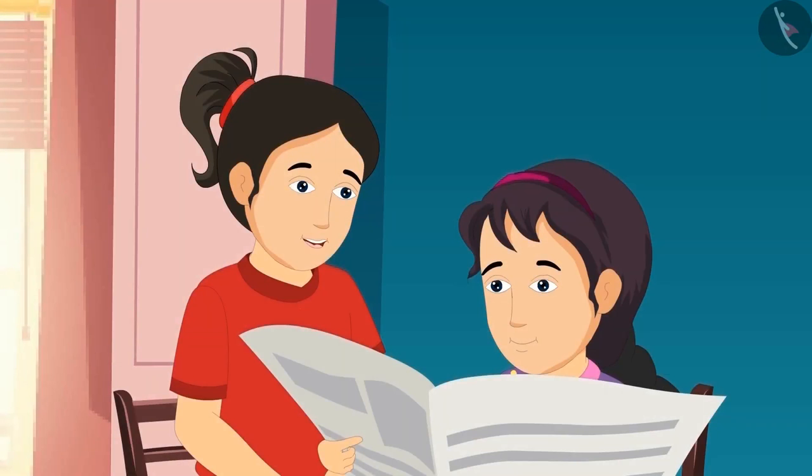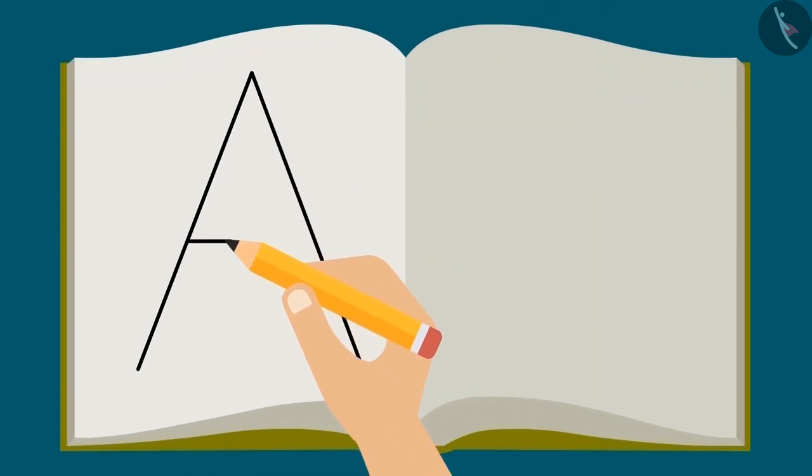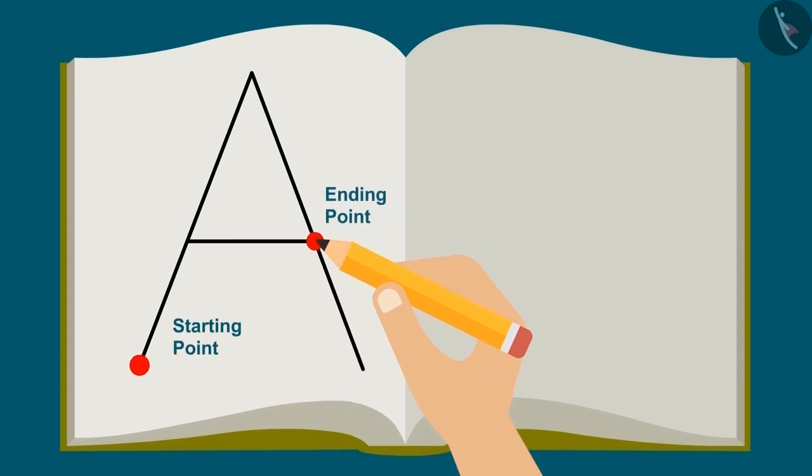The shape of A is closed from the top. Look here Reva. When you draw the alphabet A on a paper, the starting and ending points are different. And hence it is called an open shape.